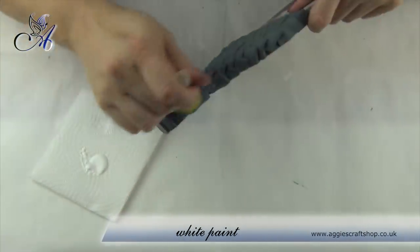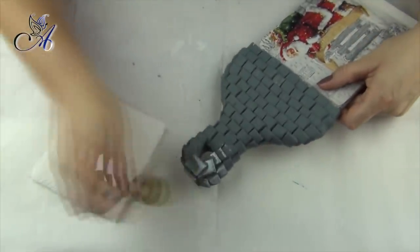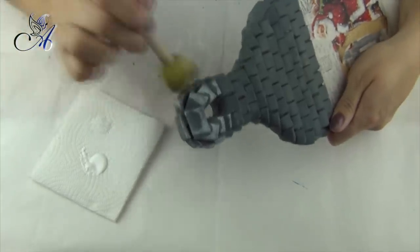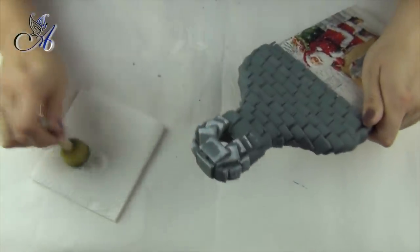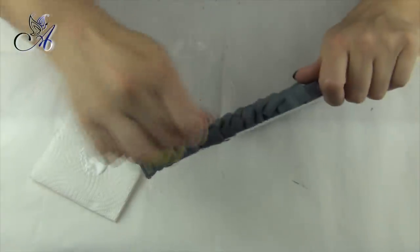I want edges of roof tiles to be snowy white so I take very little paint on my sponge, wiping excess on kitchen towel and I apply it on edges. I will add snow paste on top of the paint later on.